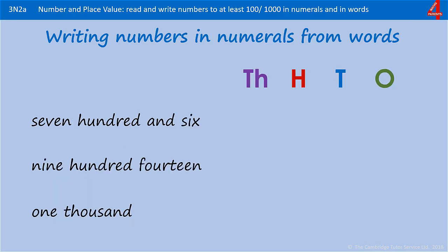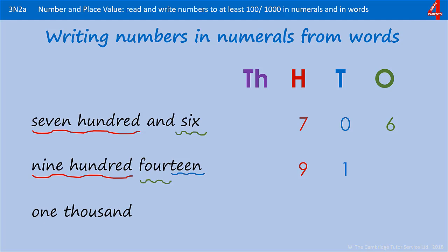These can get a little bit more confusing when you start having zeros in the middle of the number. Seven hundred and six: there's seven hundred, but there's no tens so we put a zero in the tens, and a six in the ones. Nine hundred and fourteen: there's nine hundred, and fourteen — like eleven — means you have a ten and four, so we have one ten and four ones. Then one thousand: we have one in the thousands but there's nothing else — no hundreds, no tens, and no ones — that's why there are three zeros at the end of the number.